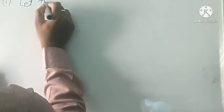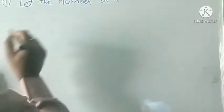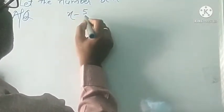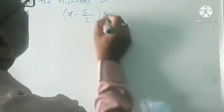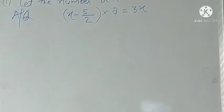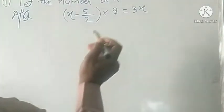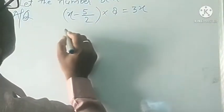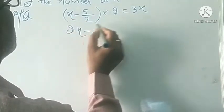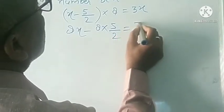Let the number be x. According to the question, (x minus 5 by 2) into 8 is equal to 3x. That is your equation. First of all, you open the bracket. You multiply 8 into x minus 5 by 2. That is 8 into x, which gives 8x.